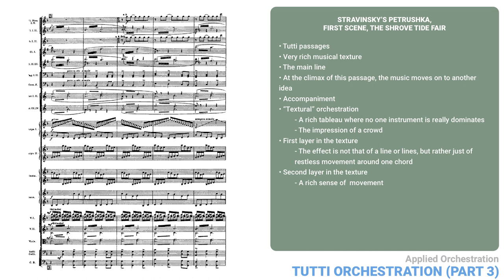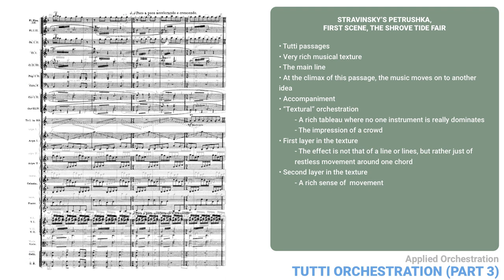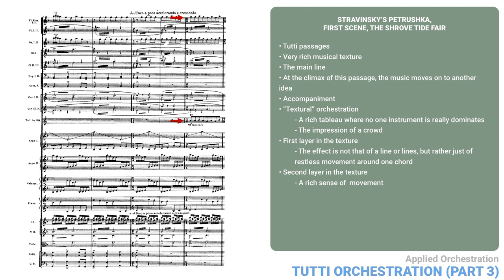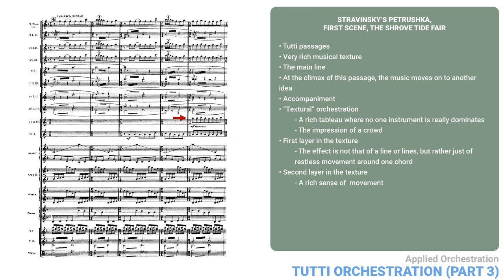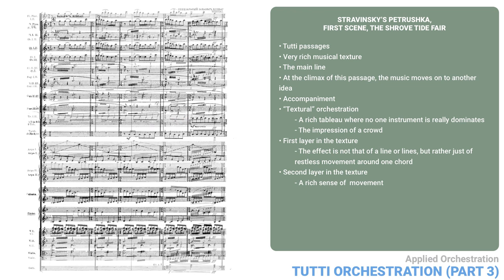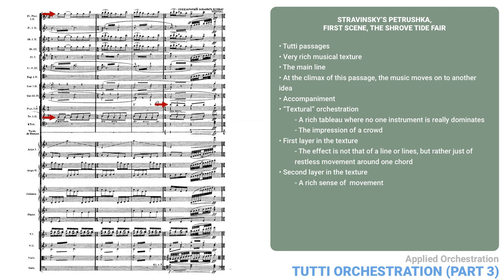As we mentioned already, the idea in the bassoons and lower strings is going to become important. Incidentally, it is also an augmentation of the motive in the flutes and trumpets. Most people will not notice this, since they sound so different. On page 11, once the bass idea stops, first one trumpet is added to the top idea, then cornet as well, on page 12, an octave higher. This process is repeated on page 13.